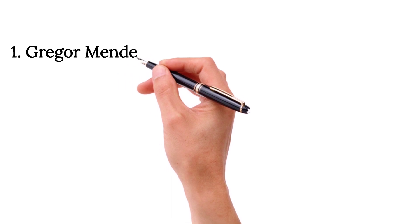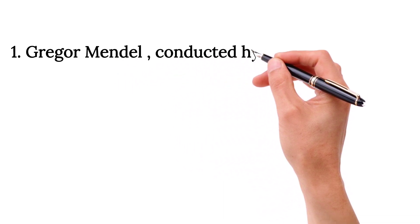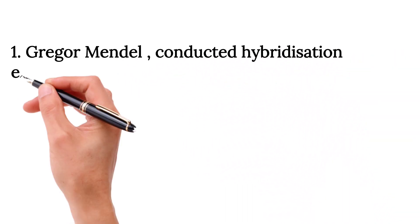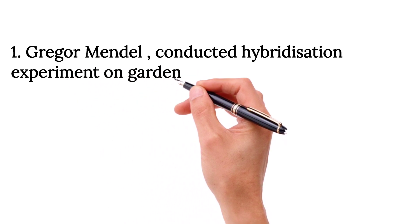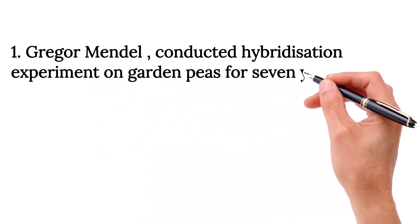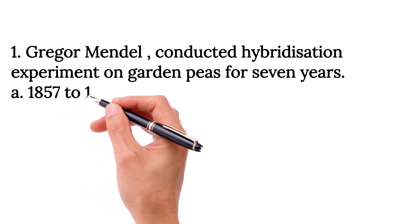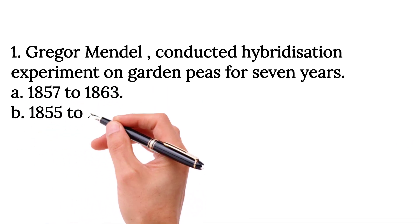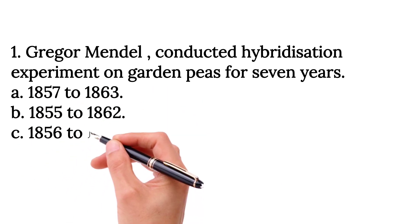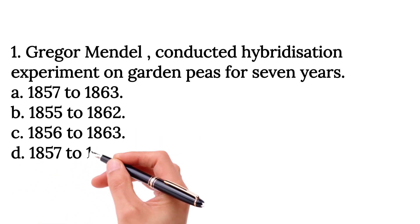Gregor Mendel conducted hybridization experiment on garden pea for 7 years. Option A, 1857-1863, Option B, 1855-1862, Option C, 1856-1863, and Option D, 1857-1864.